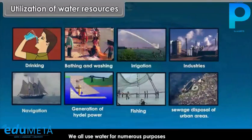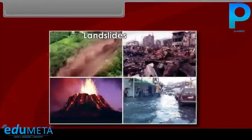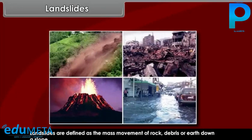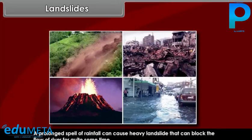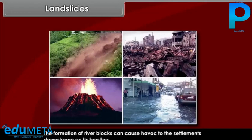Landslides are defined as the mass movement of rock, debris, or earth down a slope. They often take place in conjunction with earthquakes, floods, and volcanoes. A prolonged spell of rainfall can cause heavy landslides that can block the flow of a river for quite some time. The formation of river blocks can cause havoc to the settlements downstream on its bursting.